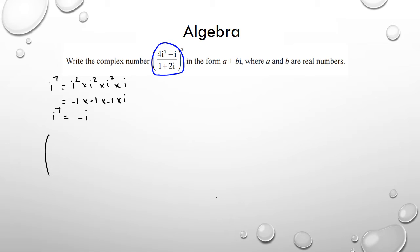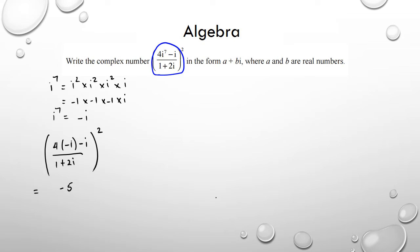In the bracket I've replaced 4i^7 with 4 times negative i, minus i, and the whole thing divided by 1 plus 2i squared. So 4 times negative i is negative 4i, and negative 4i minus i is negative 5i, divided by 1 plus 2i squared.